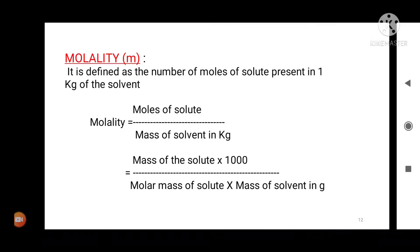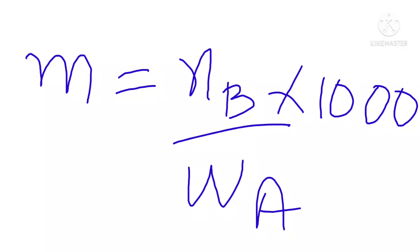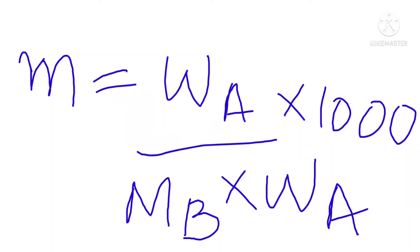Molality is represented by the small letter m. It is defined as the number of moles of solute present in 1 kilogram of solvent. Molality = moles of solute / mass of solvent in kg. It can be represented as m = (n_B / W_A) × 1000, where n_B is the number of moles of solute and W_A is the weight of solvent in grams. It can also be expressed as m = (W_B × 1000) / (M_B × W_A), where W_B is the mass of solute and M_B is the molecular weight of the solute.